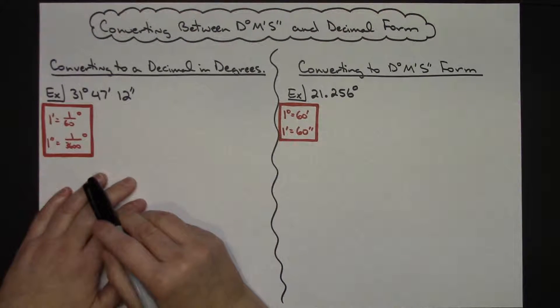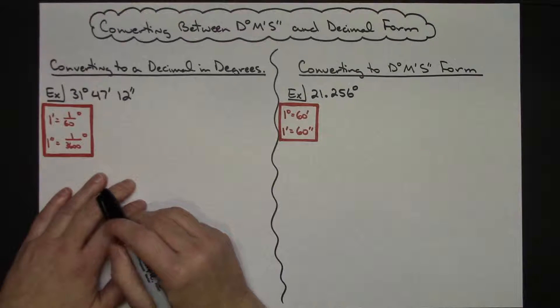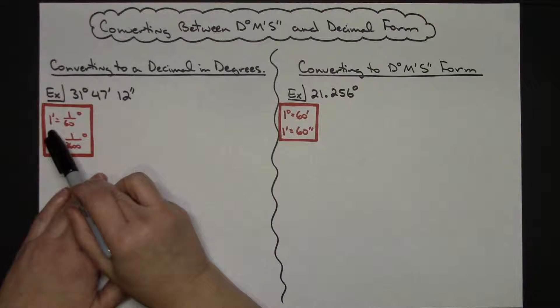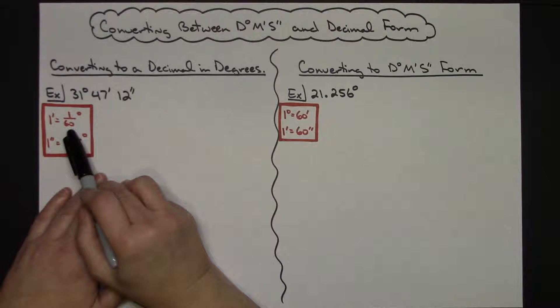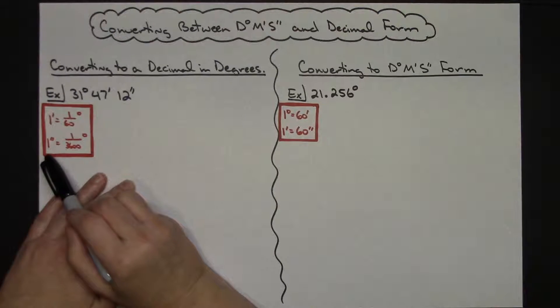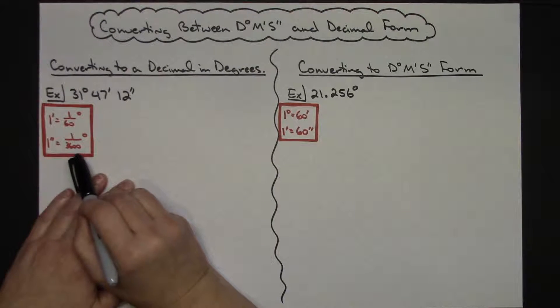To understand what we're doing or why we're doing the math that we're doing, it helps if you understand that one minute is equivalent to 1/60th of a degree and one second is equivalent to 1/3600th of a degree.